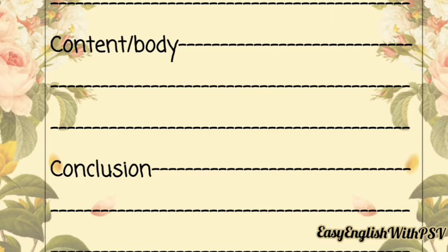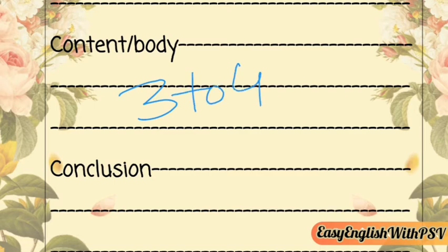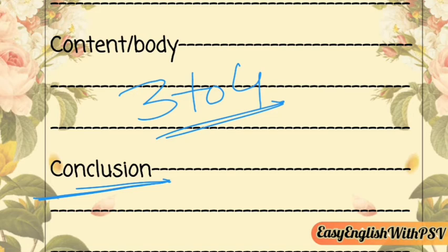The body will consist of three to four paragraphs. The third part of the article is the conclusion. The conclusion presents the main idea, your viewpoint, your comments, or criticism, as well as your recommendations. You are supposed to end the article with an appeal, a conclusion, or a warning.